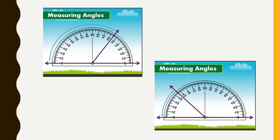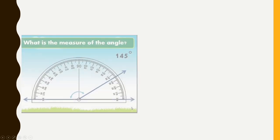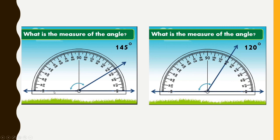So if the ray is going towards the right side, we take the inner scale; if the ray is going towards the left side, we take the outer scale. In the remaining examples: one angle measures 20 degrees (ray going right, inner scale), another measures 155 degrees (ray going right, inner scale), and another measures 145 degrees (ray going left, outer scale). One final angle measures 120 degrees (ray going left, outer scale).